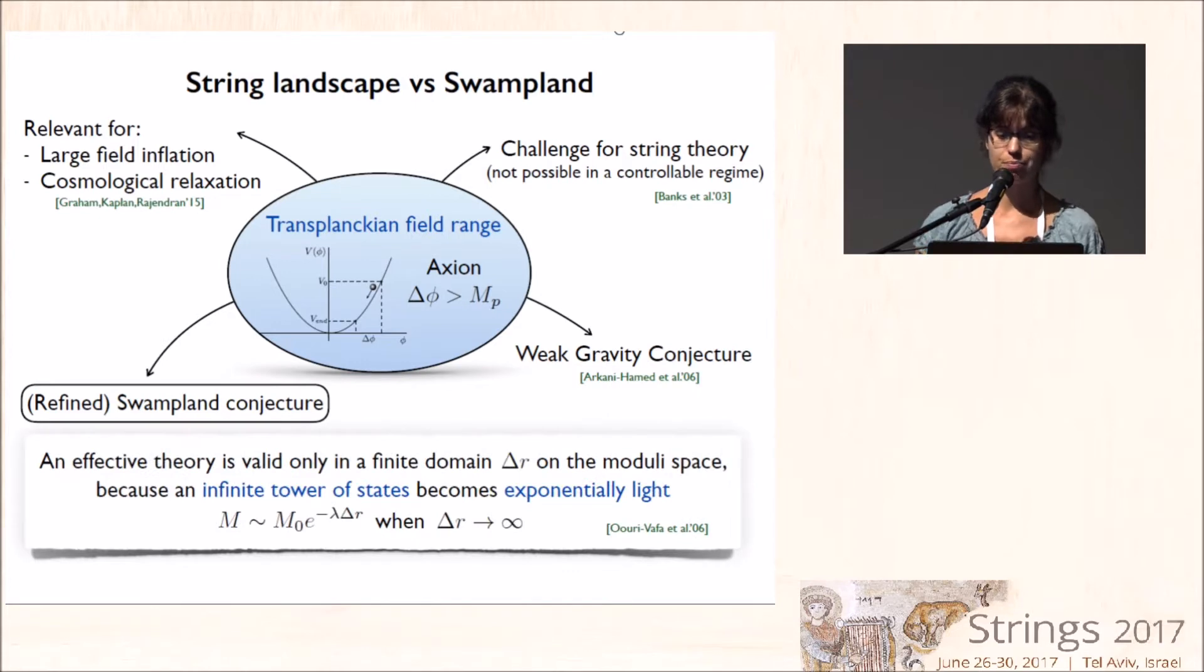Which is a generalization of a conjecture that already appeared in the paper of Oguri-Wafa, which says that an effective theory coming from string theory is valid only in the finite domain of the modular space. Because if we move parametrically far away, there will be an infinite tower of states which become light and invalidate the effective theory.